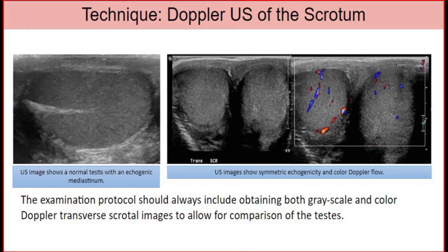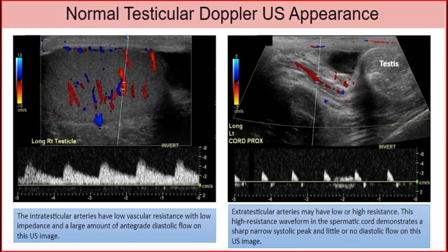The picture on the left is an ultrasound image showing a normal testis with an echogenic mediastinum. The picture on the right is an ultrasound image showing symmetric echogenicity and color Doppler flow. The examination protocol should always include obtaining both grayscale and color Doppler transverse scrotal images to allow for comparison of the testes. The intra-testicular arteries have low vascular resistance with low impedance and a large amount of antegrade diastolic flow. The extra-testicular arteries may have low or high resistance; this high-resistance waveform in the spermatic cord demonstrates a sharp narrow systolic peak and little or no diastolic flow.